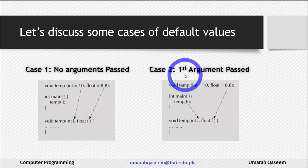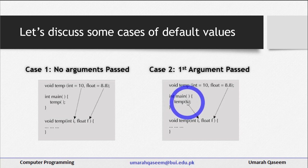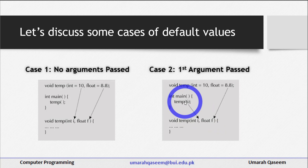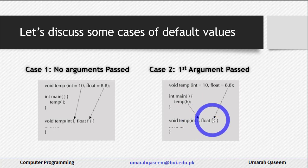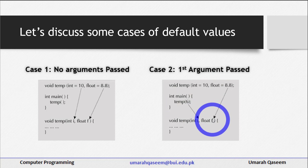Case two: if you have passed only one argument among the two — for example, you call temp and pass six — this six will be assigned to the first variable i, not the second. Sequence matters, so six goes to i and the default value 8.8 is used for the second variable f. This is very important: six will not be passed for the second variable; it will always be passed for the first variable.